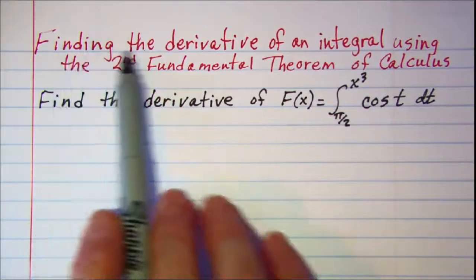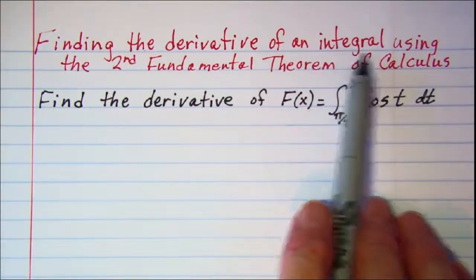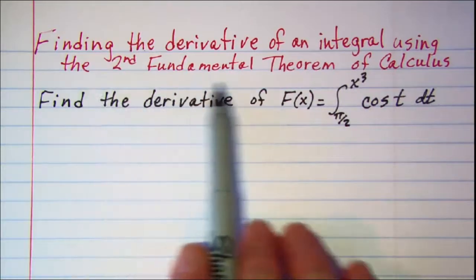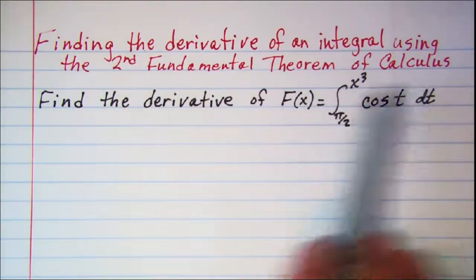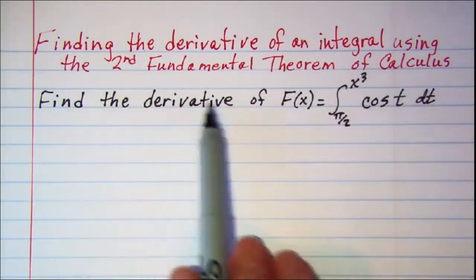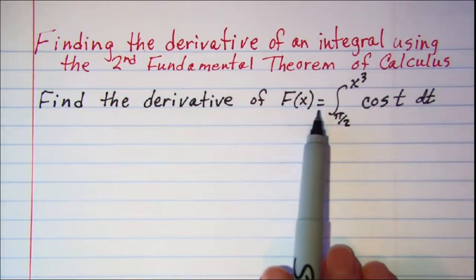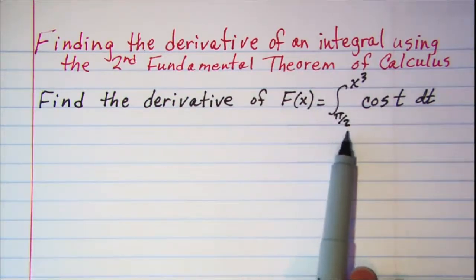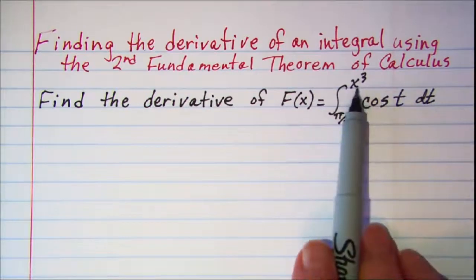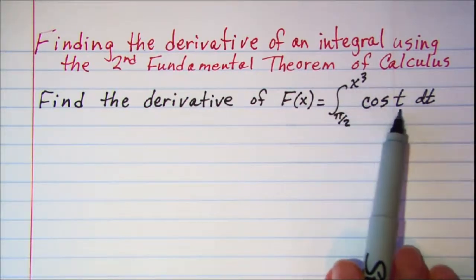In this video we'll be finding the derivative of an integral using the second fundamental theorem of calculus. Our problem is to find the derivative of f of x equals the integral from pi over 2 to x cubed of cosine t dt.